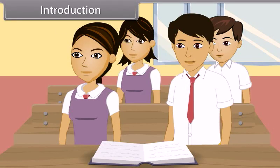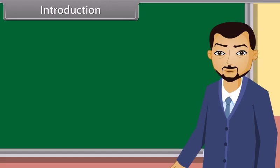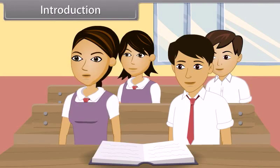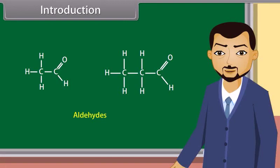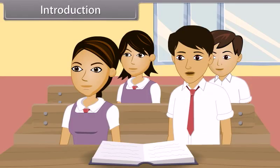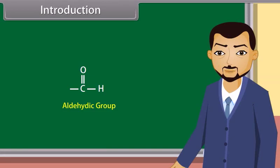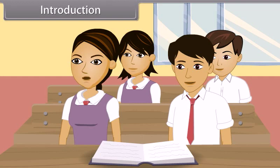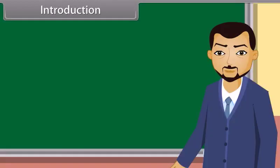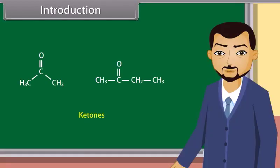Good morning teacher. Good morning students. Today we will learn about aldehydes, ketones, and carboxylic acids. Aldehydes are the organic compounds containing the aldehyde group at the end of a hydrocarbon chain. The aldehyde group is a functional group defined as CHO. Ketones are the organic compounds in which a carbonyl group is bonded to two carbon atoms.